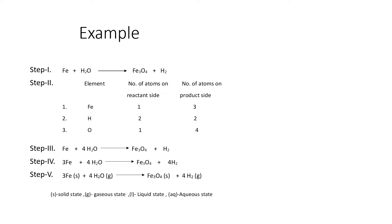To balance hydrogen, we place 4 before the hydrogen molecule on the product side, so now everything is balanced. For step five, we mention physical states: iron is in solid state (s), water is in gaseous state (g), ferrous oxide is a solid (s), and hydrogen is a gas (g).